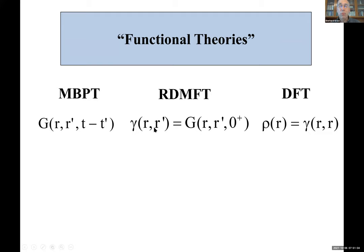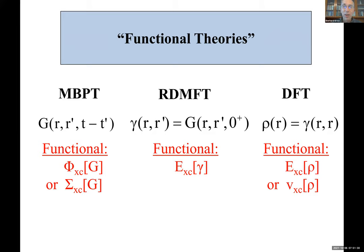That's DFT. Then one could choose the one-body density matrix — that is RDMFT. And, not so generally appreciated, one could also choose the one-body Green's function as your simplified quantity. This is more known under the heading many-body perturbation theory, but if you think about it, this is also a functional theory. So the quantity that ultimately you have to approximate is, in the case of DFT, the exchange-correlation energy as a functional of the density.